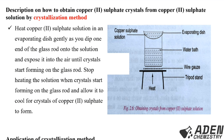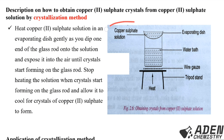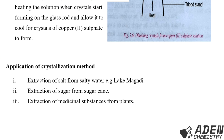Here is how to obtain copper sulfate crystals from copper sulfate solution by crystallization. Heat copper sulfate solution in an evaporating dish gently while dipping one end of a glass rod into the solution and exposing it to air until crystals start forming on the glass rod. Stop heating when crystals start forming on the glass rod and allow it to cool for crystals of copper sulfate to form. The diagram shows the evaporating dish with copper sulfate solution being heated using a water bath.